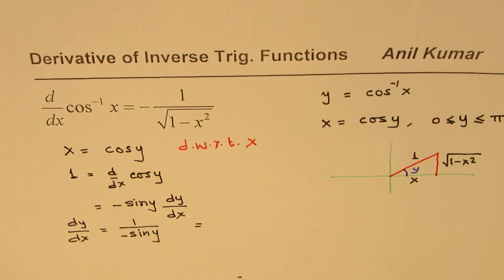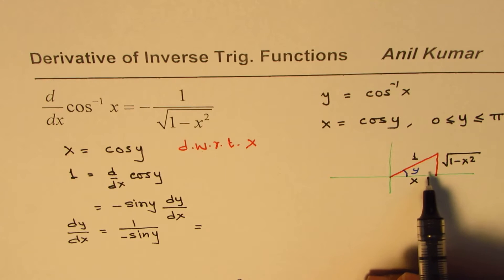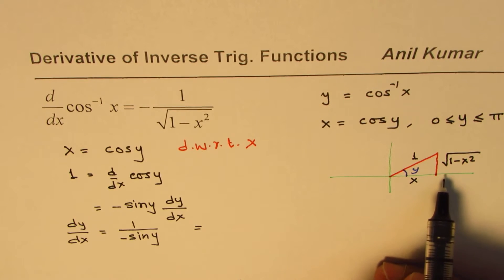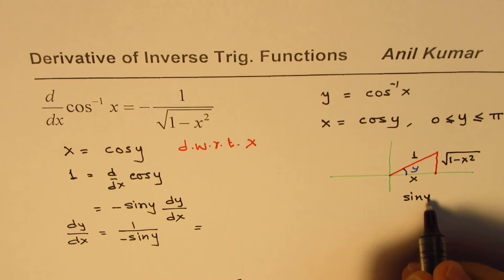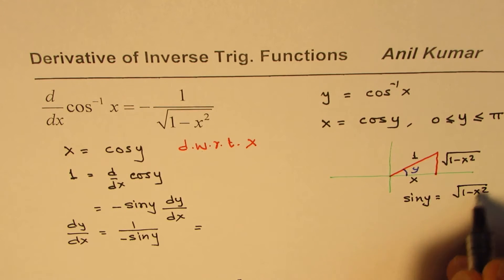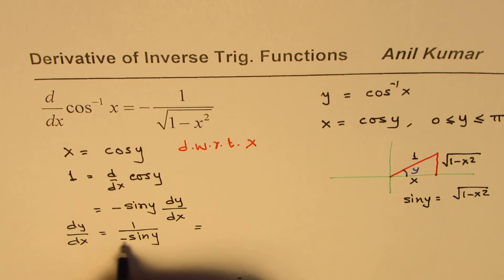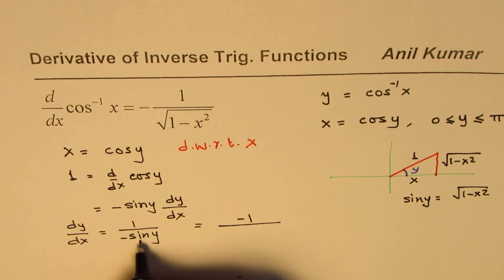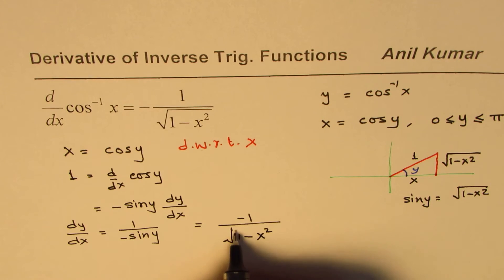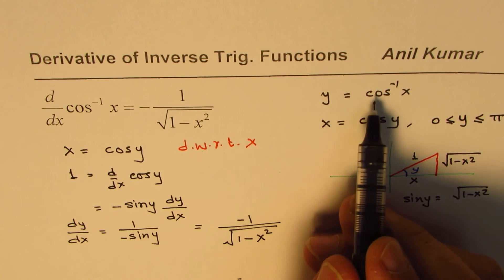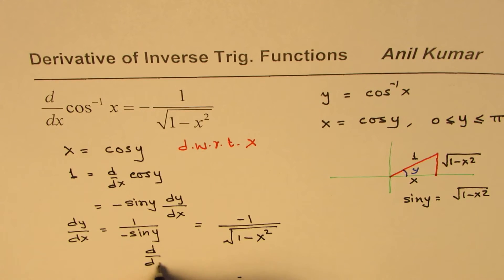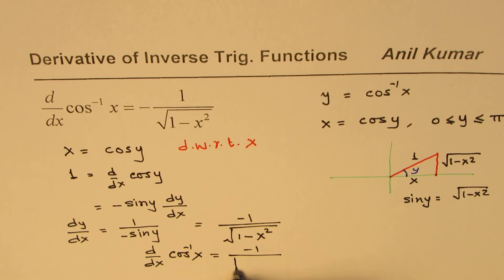Now, what is 1 over minus sine y? If you look into this triangle, sine y is the ratio of the opposite side to the hypotenuse. So sine y is square root of 1 minus x squared over 1. Therefore, dy/dx equals to minus 1 over square root of 1 minus x squared. The derivative of y is this — and what is y? y is cos inverse x. So the derivative of cos inverse x equals to minus 1 over square root of 1 minus x squared.